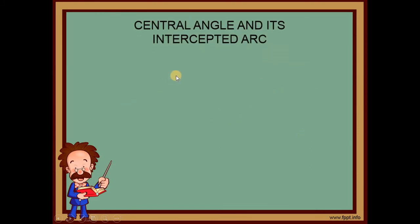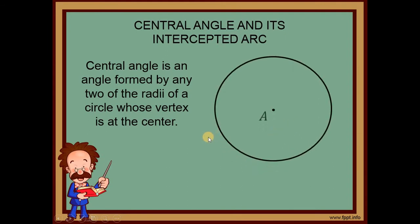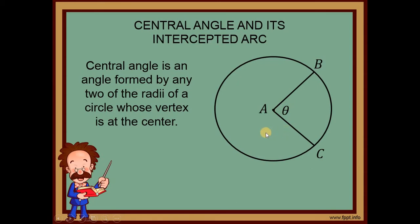Now let's talk about central angle and its intercepted arc. A central angle is an angle formed by any two radii of a circle whose vertex is at the center. Radii is the plural of radius, so we're talking about two radii. The vertex is at the center. So for circle A, with radius AB and radius AC, the angle BAC — this theta — is what we call a central angle.